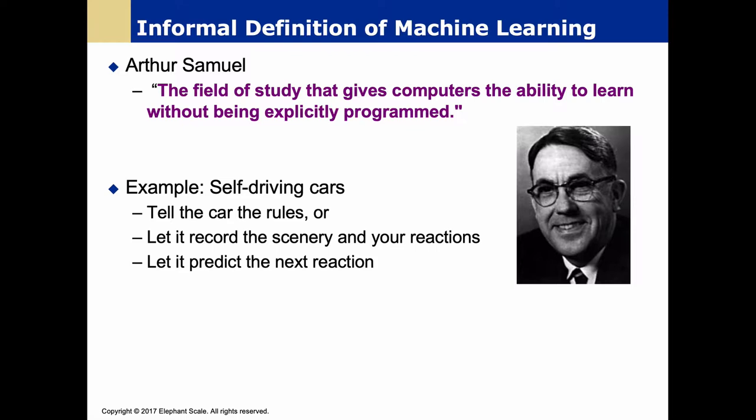Let's use an example of self-driving cars. Traditionally, what we might have done is tried to encode all the rules of the road — stop on red lights, that kind of thing. For a lot of reasons, that approach would probably never work for a self-driving car, and if we took that approach, we probably never will have one.